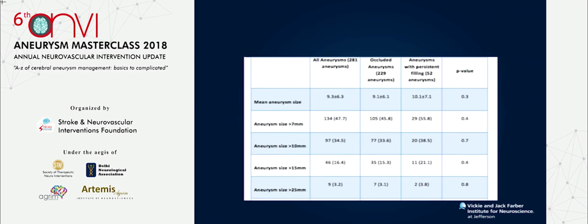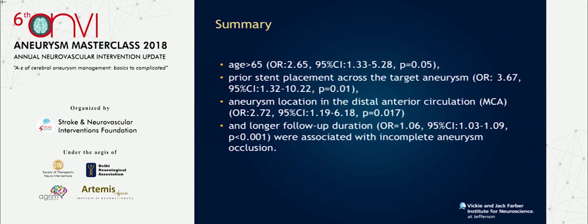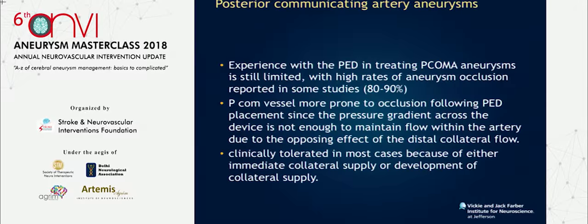For larger aneurysms, the summary is: prior stent placement across the target aneurysm decreases the chances of responding to pipeline. Aneurysm location — distal aneurysms are less likely to respond. Follow-up duration is tricky — this is a bias because once an aneurysm is gone with pipeline we don't follow it anymore, but if it's still filling, we'll continue to follow it.